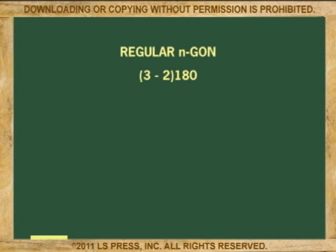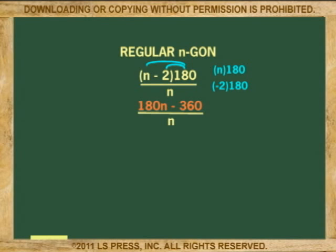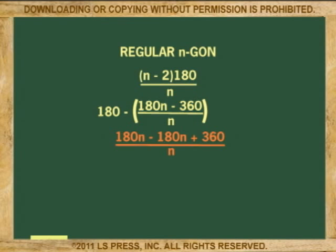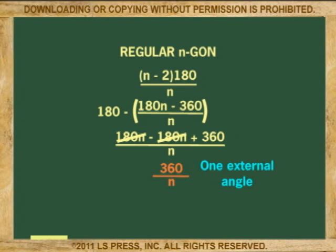Let's try it now with an infinite number of sides — for that we will use n. Using the formula (n minus 2) times 180, divided by n, to get the size of one interior angle. Distribute the numerator: 180n minus 360, all over n. Now subtract this from 180 to find the exterior angle. The 180n terms cancel, leaving 360 over n as one exterior angle in terms of n. Multiply by n to get the sum of all exterior angles, and the n's cancel, leaving 360 degrees.